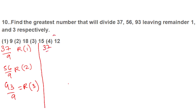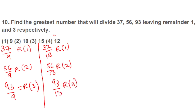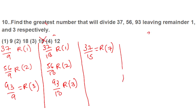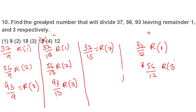Checking option 15: 37 divided by 15 gives remainder 7, but we need remainder 1 — so this option is cancelled. Checking 12: 37 divided by 12 gives remainder 1, but 56 divided by 12 gives remainder 8, and we need remainder 2 — so this option is cancelled too. We have two valid options: 9 and 18. The question asks for the greatest number, so 18 is the answer.